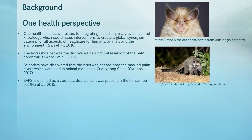A One Health approach aims at integrating multi-disciplinary evidence and knowledge which coordinates interventions to create a worldwide synergism catering for all aspects of healthcare for humans, their animals and their environment. From a One Health perspective, SARS is a zoonotic disease. Scientists discovered that the horseshoe bat in China was the original reservoir of SARS, which passed it onto the masked palm civet being sold in the animal markets in Guangdong, China for human consumption. This is the origin of how this atypical pneumonia started. The SARS pandemic was declared over in 2004 when no further infections were reported.